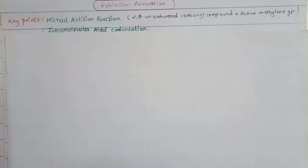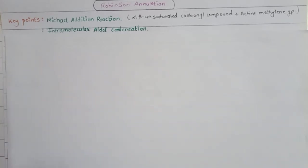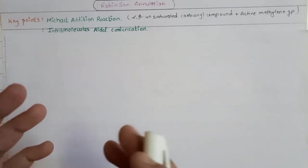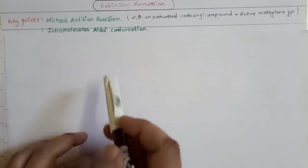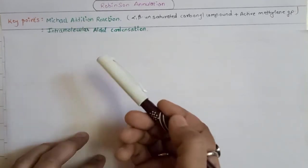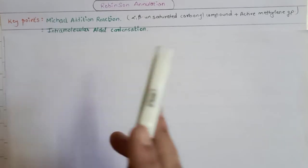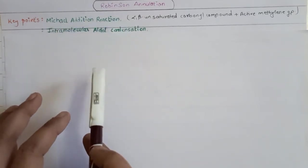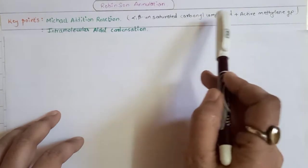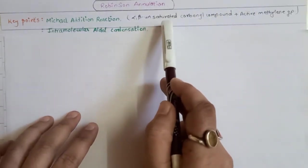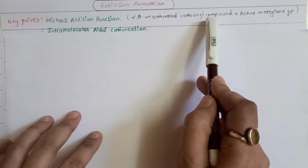Now we have to see in detail what the Robinson annulation reaction is - what starting raw material is used in the first reaction and what is the final product. First of all you need to understand these two chemical reactions. So first we will talk about Michael addition reactions. In Michael addition, you are basically combining two organic compounds together.